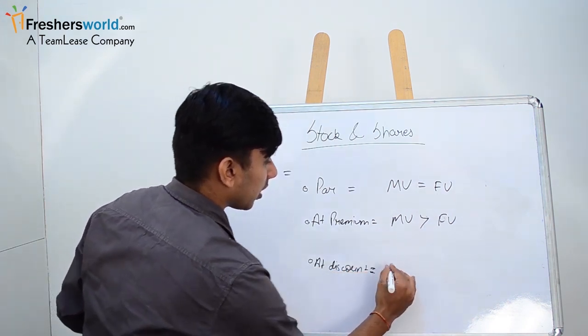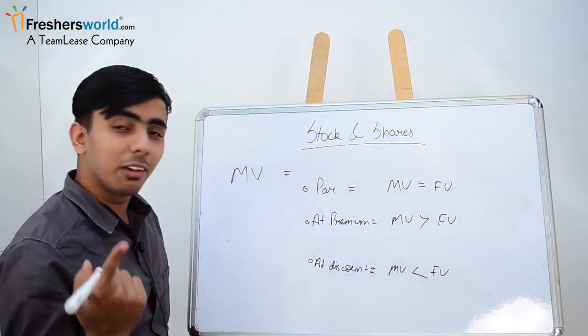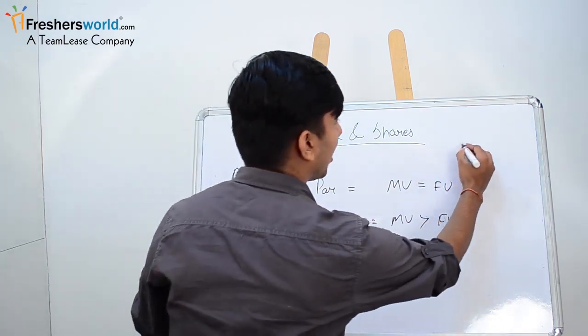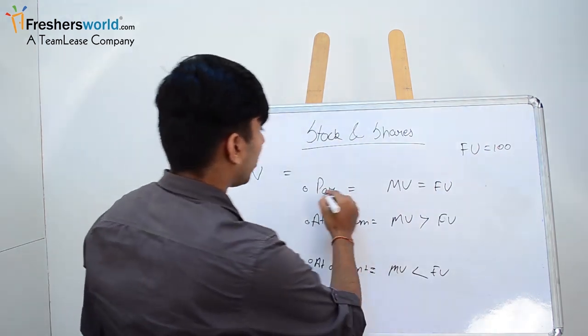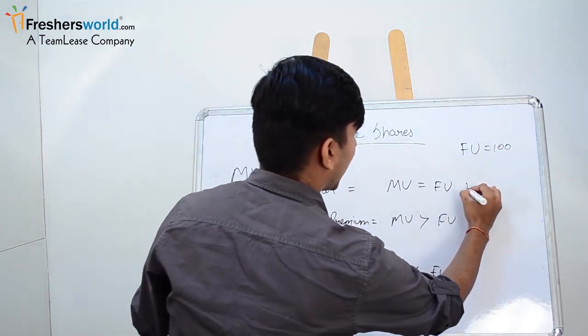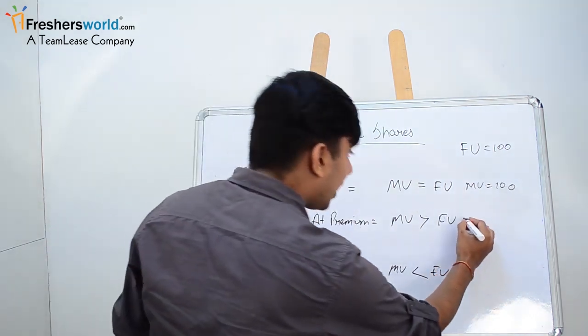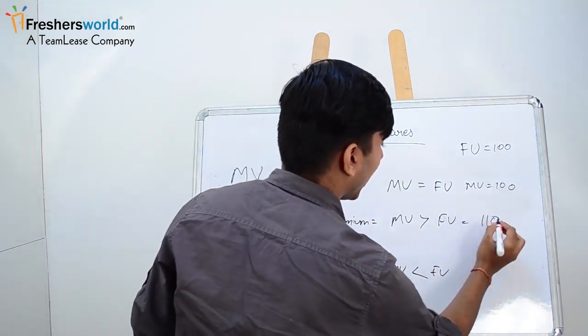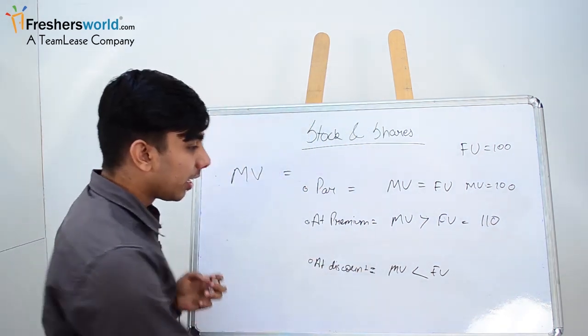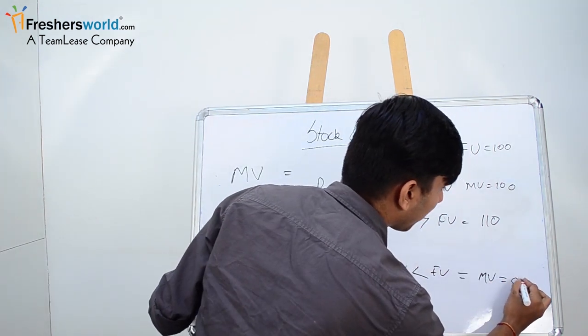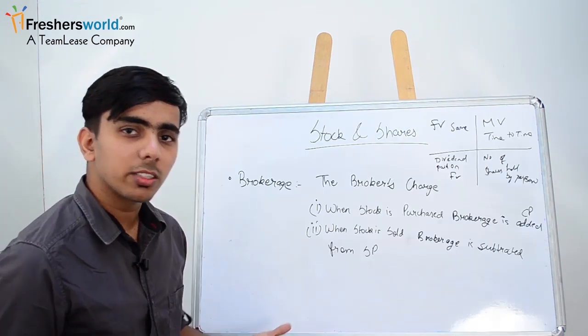In discount, your market value is less than your face value. I'll give you a simple example. If your face value is suppose 100, in par the market value will also be 100. In premium, it can be 110, 120—more than 100. In discount, your market value can be 90 per share.